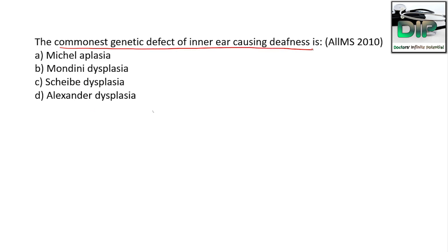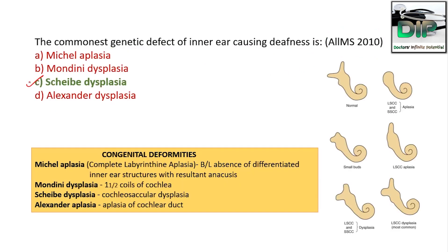The commonest genetic defect of the inner ear causing deafness is: Option A, Michel aplasia; Option B, Mondini dysplasia; Option C, Scheibe dysplasia; Option D, Alexander dysplasia. This question was asked in ENT 2010. The correct answer is Scheibe dysplasia.